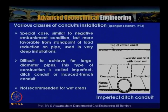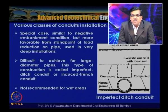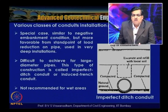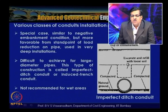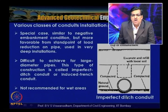Another case is the imperfect ditch conduit (or induced trench conduit) condition, which is similar to the negative embankment condition but more favorable from the standpoint of load reduction, used in very deep installations. Here the top of the pipe is above the natural ground level, filled with compacted fill, while loose soil is placed above the pipe. This is not recommended for wet areas as it can invite seepage and endanger pipe stability.